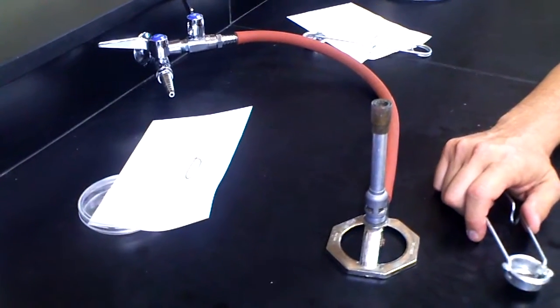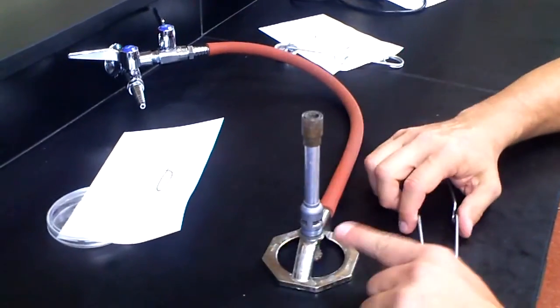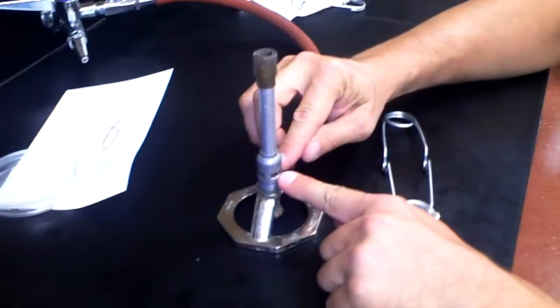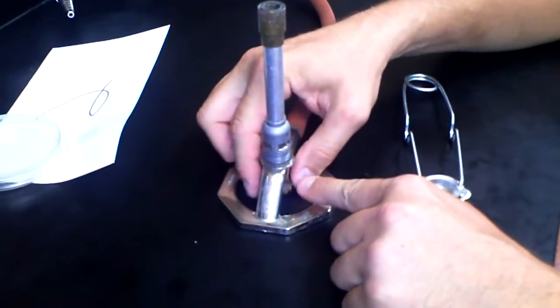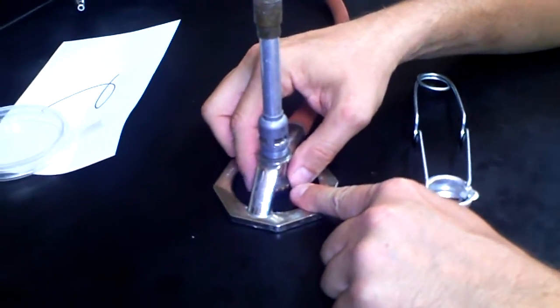When we light the Bunsen burner, we want to make sure we have our safety goggles on. We want to make sure that our air intake valve is open to the brass nut, and then we have some opening at the bottom of our valve.